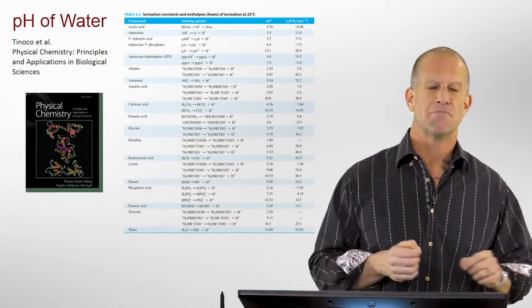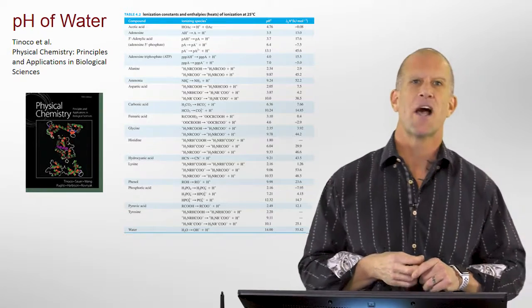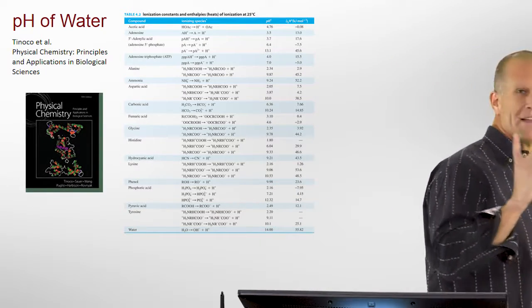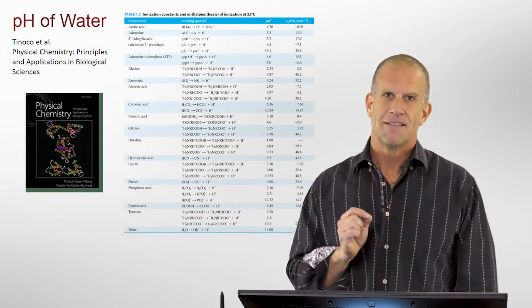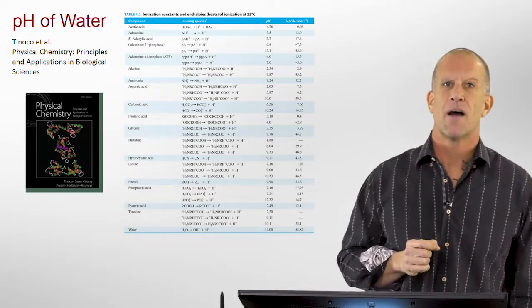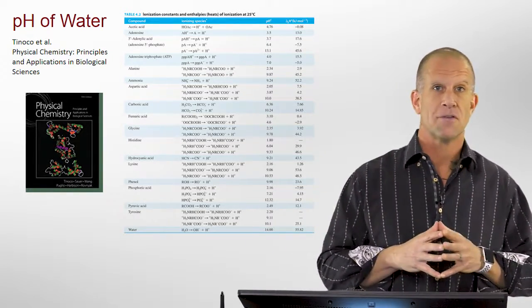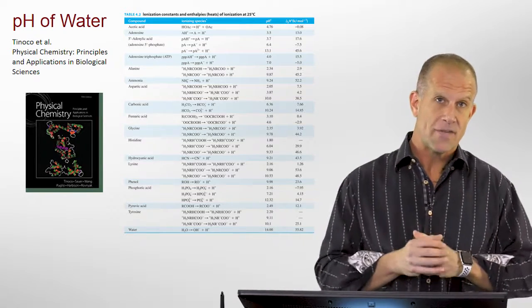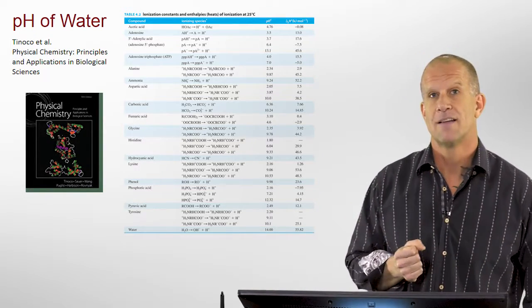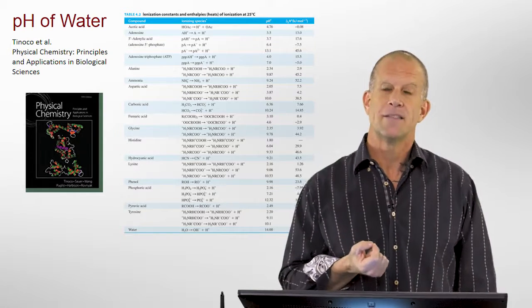So, we know it's a pH 7. We're done, right? Actually, to a lot of people's surprise, even over what I would call physiological conditions, the pH varies significantly away from pH 7.